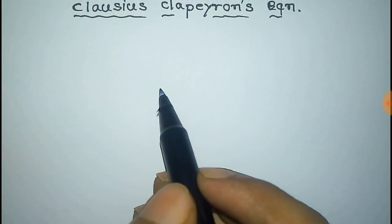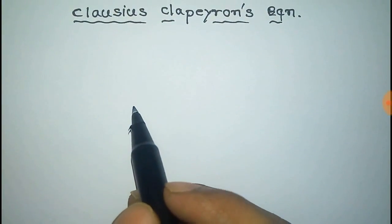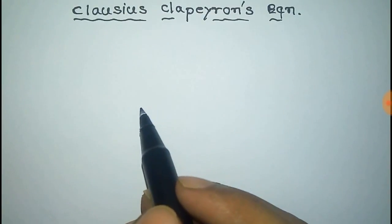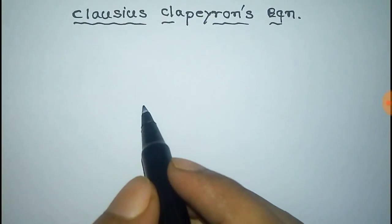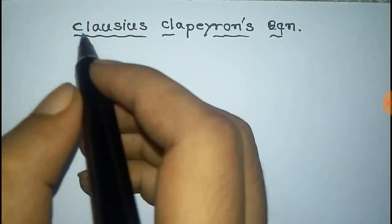We have to derive the Clausius-Clapeyron equation. The Clausius-Clapeyron equation gives the change of pressure with temperature at first order phase transition.